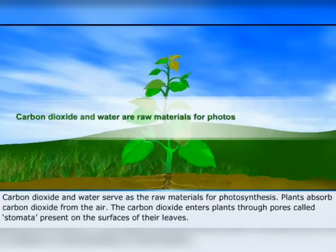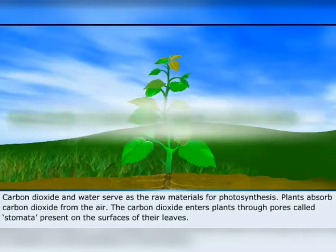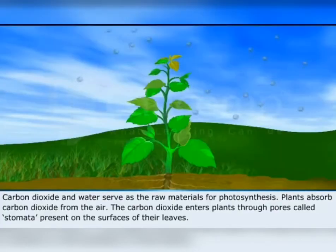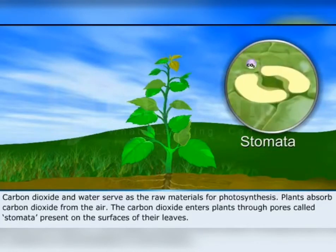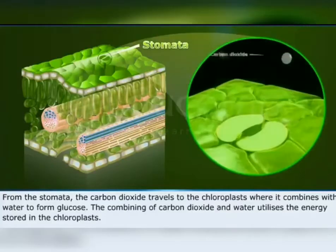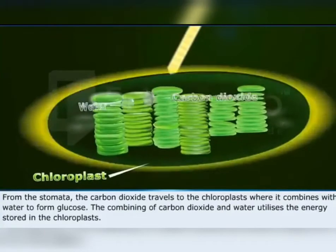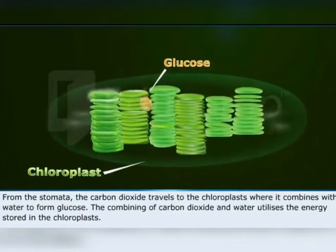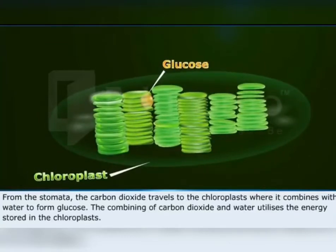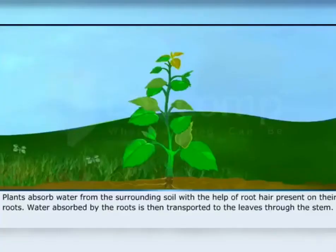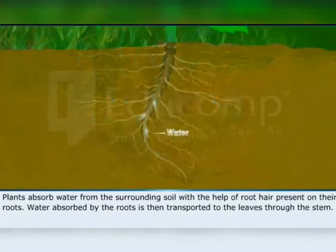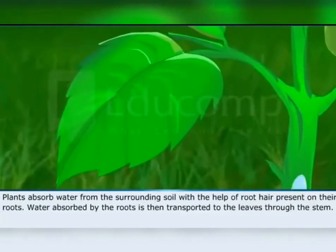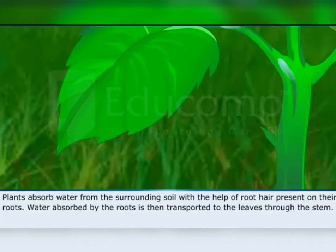Carbon dioxide and water serve as the raw materials for photosynthesis. Plants absorb carbon dioxide from the air. The carbon dioxide enters plants through pores called stomata present on the surfaces of their leaves. From the stomata, the carbon dioxide travels to the chloroplasts, where it combines with water to form glucose. Plants absorb water from the surrounding soil with the help of root hairs present on their roots. Water absorbed by the roots is then transported to the leaves through the stem.